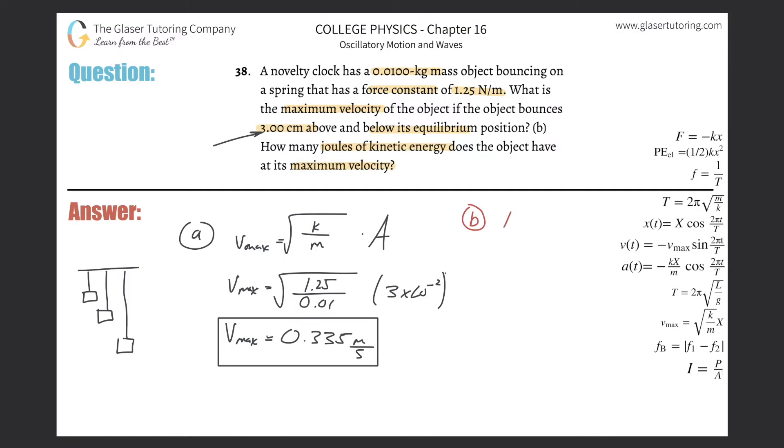So what's kinetic energy? This is easy now. One half mv squared. So the maximum kinetic energy will be found by taking the maximum velocity and plugging it in. So this is going to be equal to one half times the mass of the object, 0.01, and the velocity is now 0.335 squared.